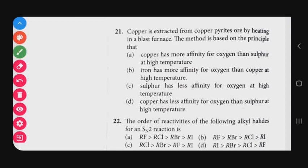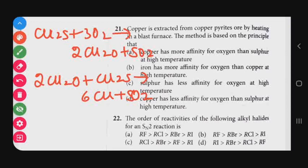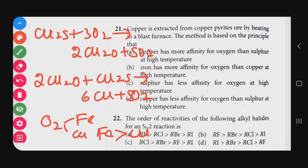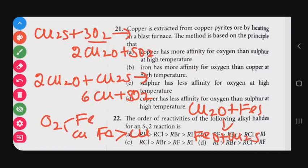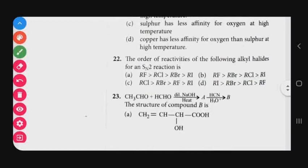Let's get started. Question number 21: Copper is extracted from copper pyrites by heating in a blast furnace. This method is based on the principle that iron has higher affinity than copper for oxygen. So copper oxide reacts with iron sulfide to form iron oxide and copper sulfide. This copper sulfide reacts with three molecules of oxygen at high temperature. Copper has high affinity for oxygen at high temperature, so option A is the correct answer for question 21.